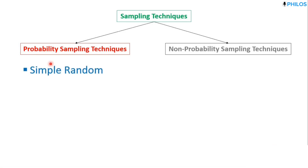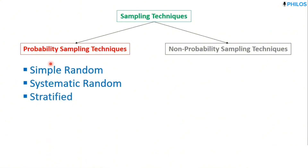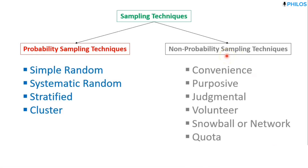We are going to look at four probability sampling techniques. The first is simple random sampling, the second is systematic random sampling, the third is stratified sampling, and the fourth is cluster sampling. For non-probability sampling techniques, there are also several examples, but first let's look at the probability sampling techniques.